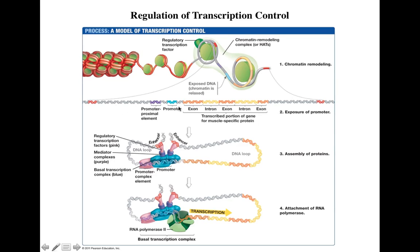Relaxation of the chromatin and removal of DNA from histone proteins makes it possible for the transcription machinery to access the promoter region. The promoter region is the landmark for initiation of transcription. Here you can see the proximal promoter, the gene to be transcribed, and two enhancer regions.